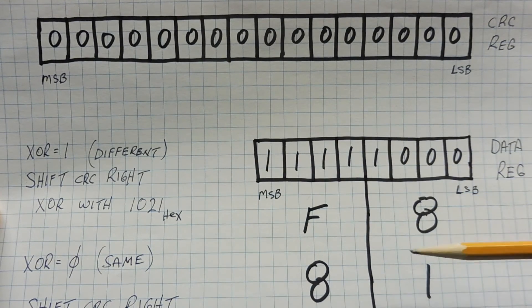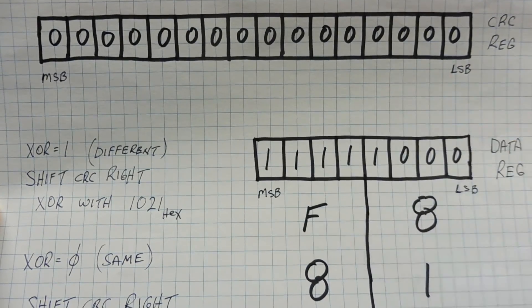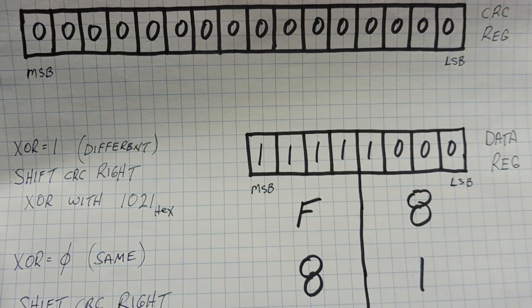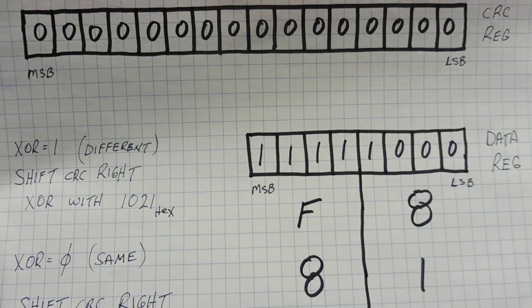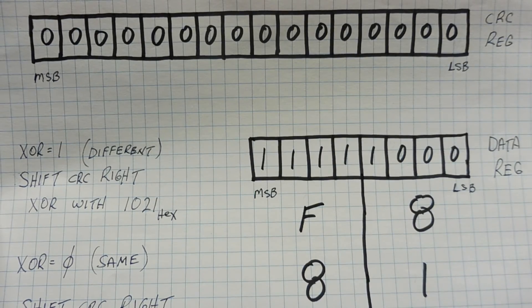Then we put the next data byte into the data register, and we do the same thing. Now we can do this for multiple bytes until our data is ended, and whatever we have left in the CRC register will be our 16-bit CRC checksum.